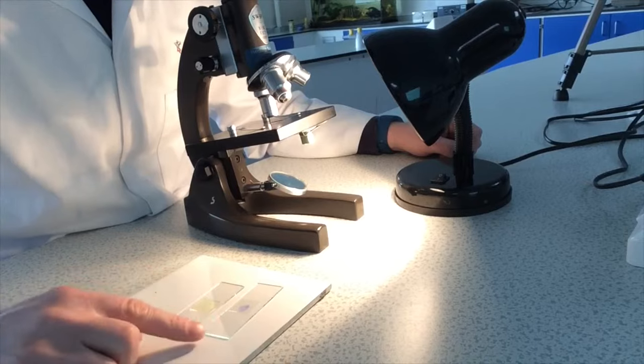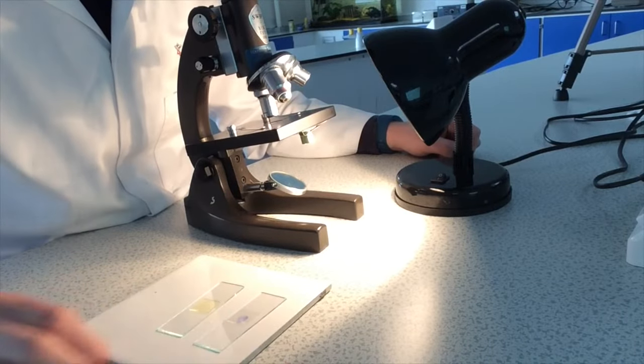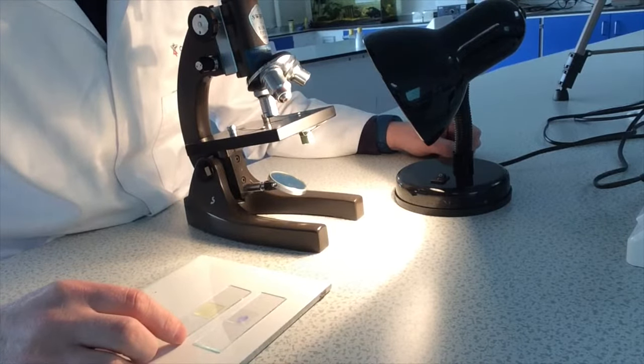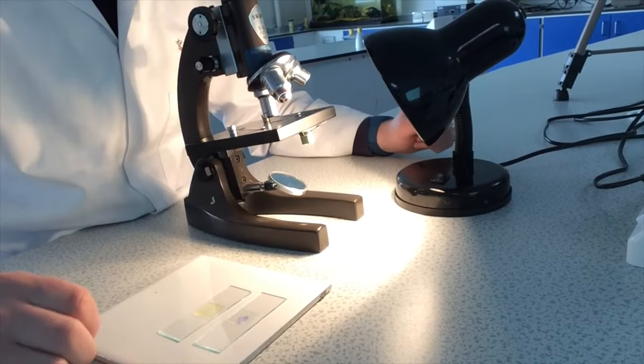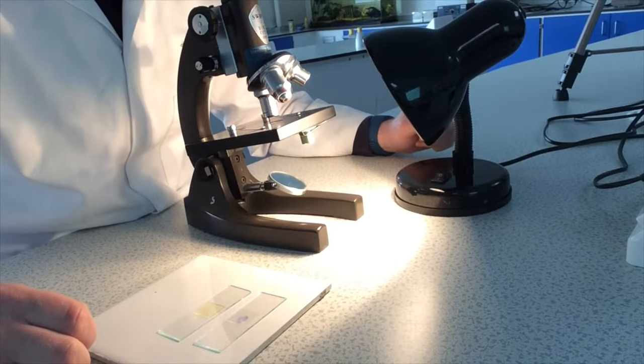Now I have my animal cell slide which is my cheek cells and my plant cell slide which is some onion cells. I'm now going to view them under the microscope and hopefully identify some cell structures.